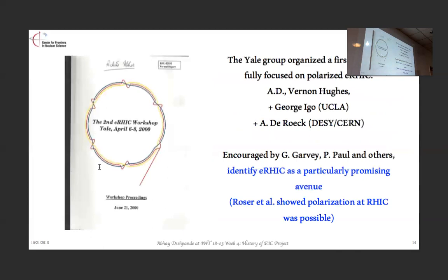The second attempt was the eRHIC effort. The first time I heard about eRHIC was from George Igo, even three or four years before that time, as we were working on the polarized HERA effort. Albert De Roeck was clearly instrumental in helping us transfer everything we had done for the polarized program into this. Jerry Garvey and Peter Paul were also of great support. Roser et al. were already showing that polarization in RHIC could exist.